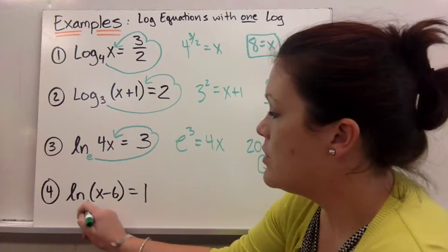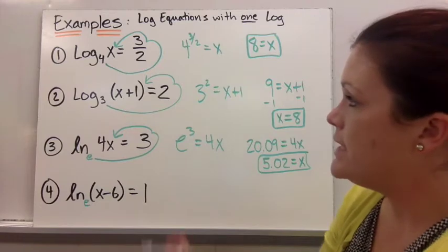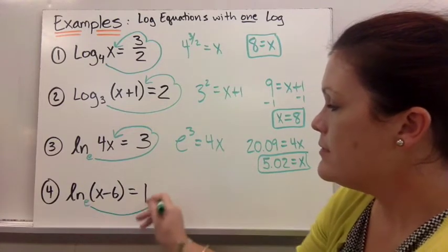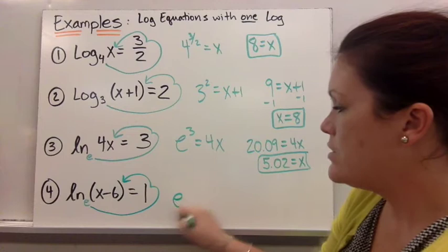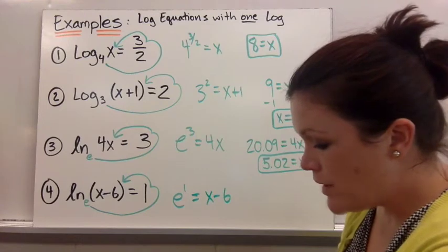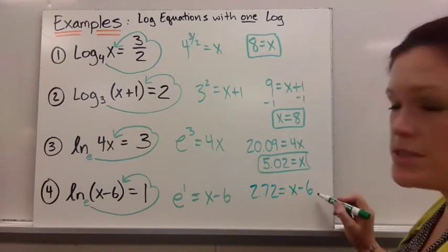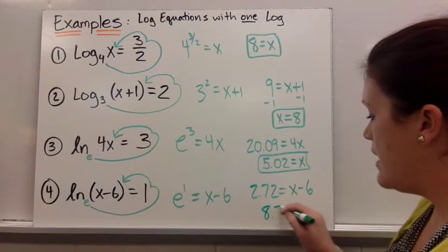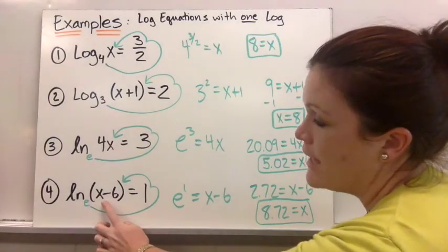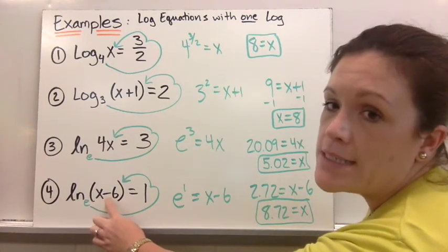For the last example, natural log has an understood base of e, and log has an understood base of 10. So if there's not a base, you understand that it's 10. Rewriting this one: e to the first power equals x minus 6. e to the first power is approximately 2.72, so 2.72 equals x minus 6. Adding 6 to both sides, I get x approximately equals 8.72. Checking: would that make me take the log of a negative? No, because 8.72 minus 6 would still be positive.